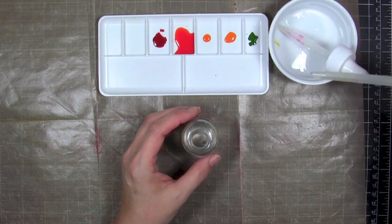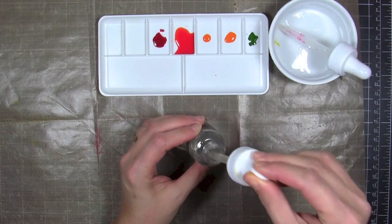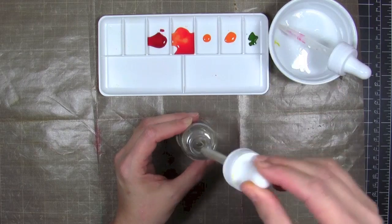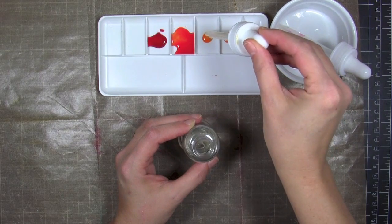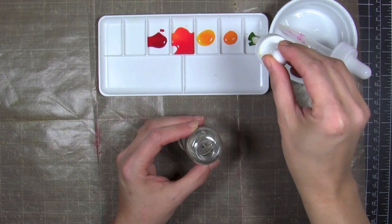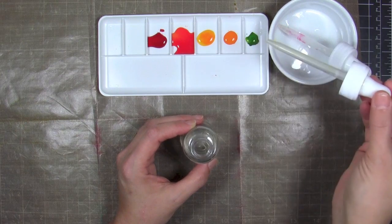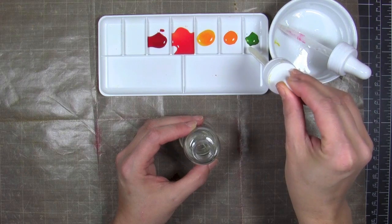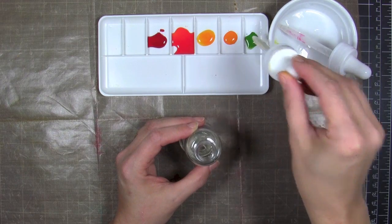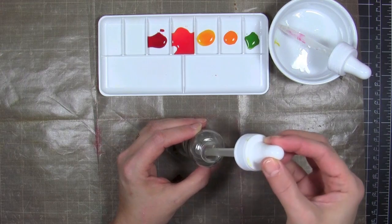I use this Ranger essentials mister that I always keep filled with water. Then I can take a clean dropper tool and just add droplets of water. It's always better to add a little bit and then come back and add more because once you get too heavy-handed with the water, you've got to start all over again.